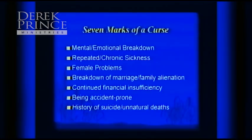Derek has isolated through years of ministering to people who seem to be under a curse these seven marks of a curse. Anyone in their own life or family history may have one or two of these things, but if you see them repeatedly across generations of a family, you have to ask yourself whether there is a supernatural barrier in place. The first is mental and emotional breakdown. The second is repeated or chronic sickness — hereditary, generational things like arthritis, migraine headaches — things you think of as the mark of your family.